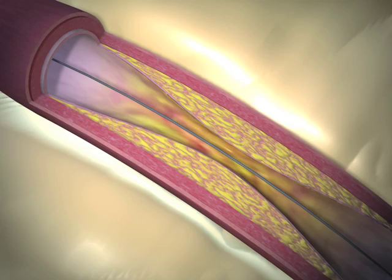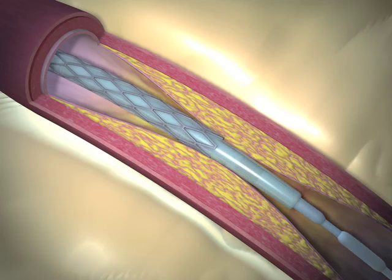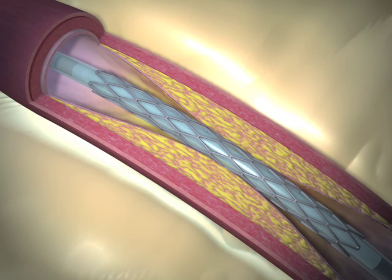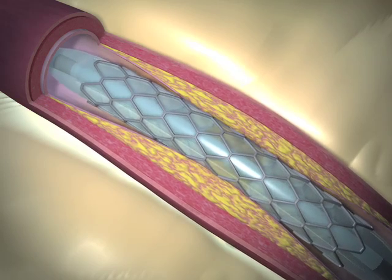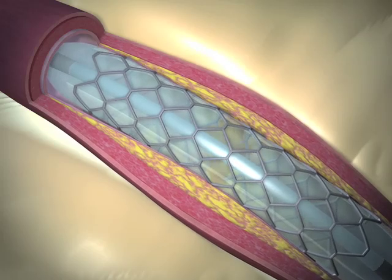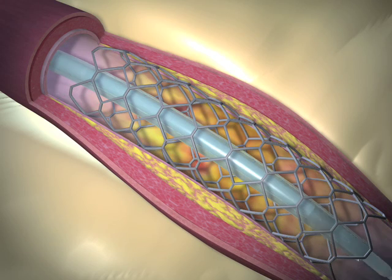After aspiration of the thrombus, a stent is passed directly across the residual obstruction over the existing guide wire. Stenting is performed by deployment of the stent by inflation of the balloon delivery catheter. The balloon delivery catheter is then deflated and removed.